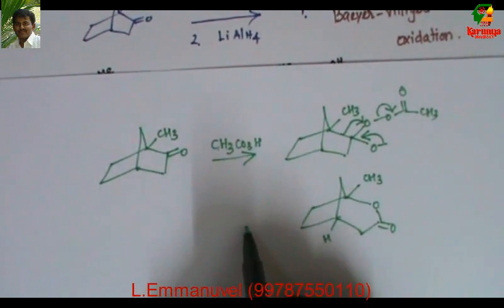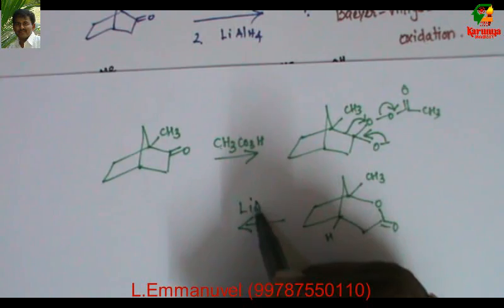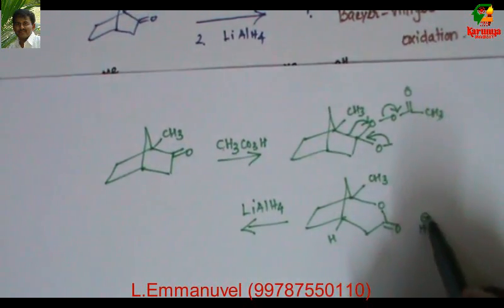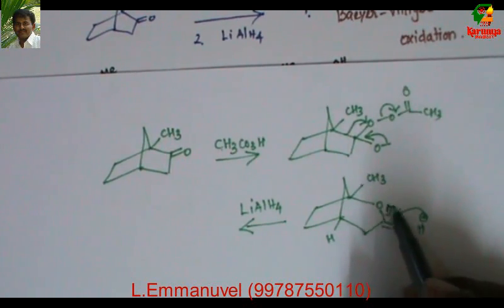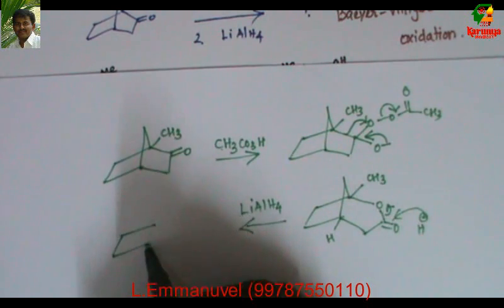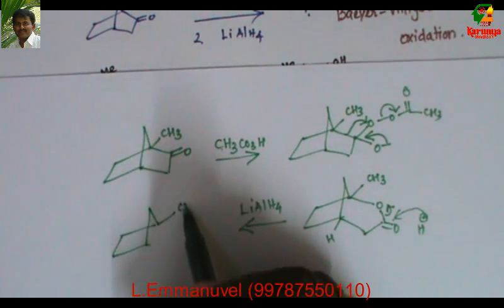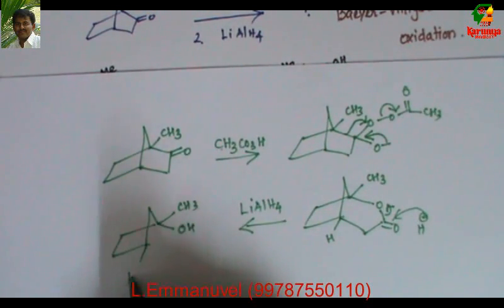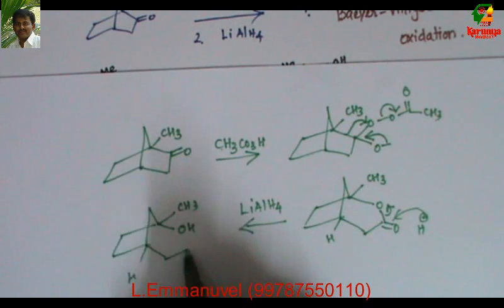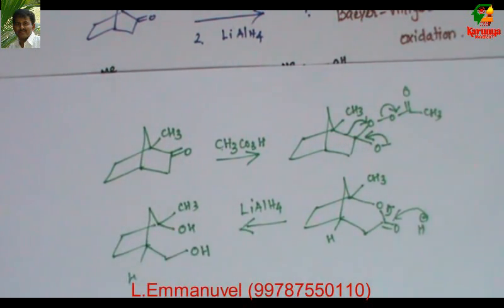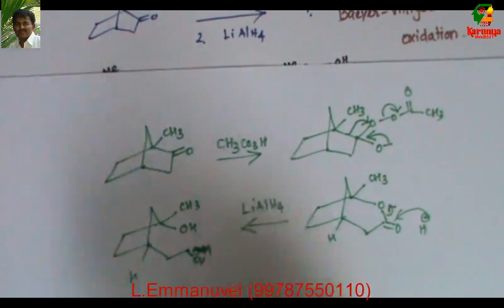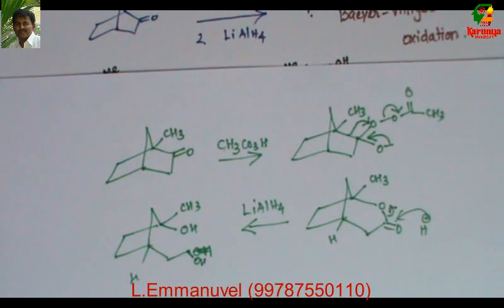Now, when we reduce this lactone with lithium aluminium hydride, the mechanism is straightforward. Hydride (H−) is delivered to the ester carbonyl to give an aldehyde and an alcohol. Further, the aldehyde is also reduced to give a primary alcohol. Since there are two carbons in the side chain, we get a CH2CH2OH group as the alcohol product.